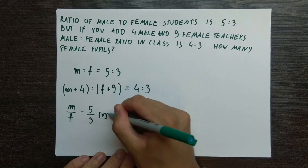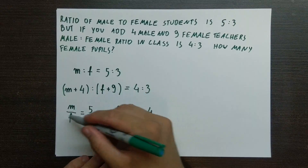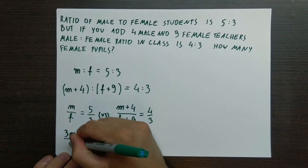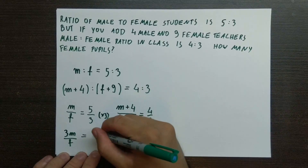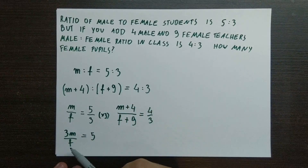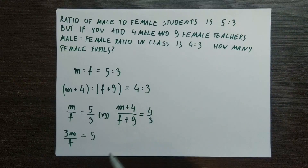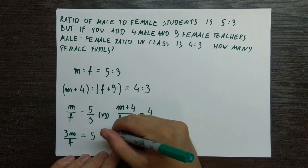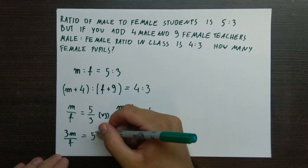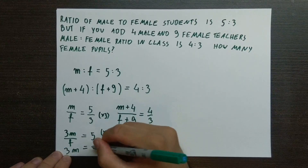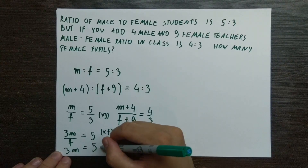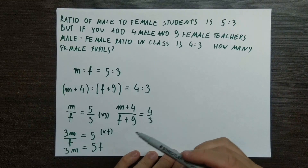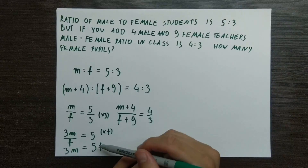For the first equation — M over F equals 5 over 3 — we multiply both sides by 3 to get 3M divided by F equals 5. Then we multiply both sides by F to get 3M equals 5F. That's a very important step. That's the first part of our simultaneous equation.